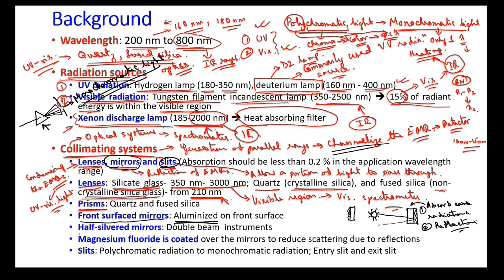There is another type called half-silver mirrors, used in double-beam instruments to split a beam. 50% of the light is allowed to pass through and 50% is reflected to the other side. Magnesium fluoride is coated over the mirrors to reduce scattering due to reflections.